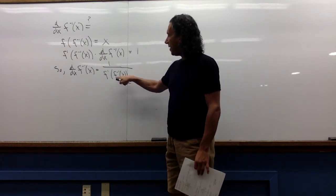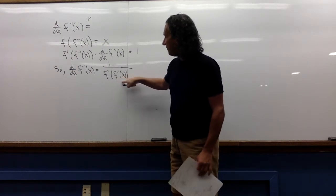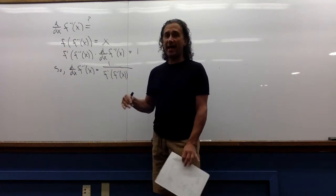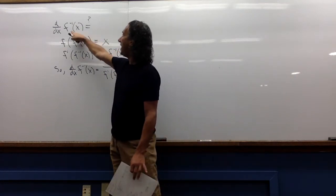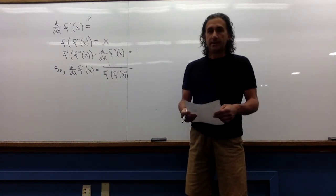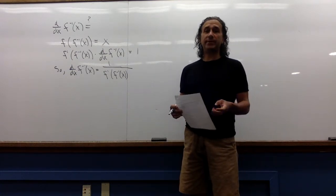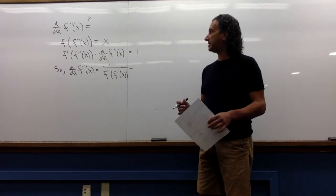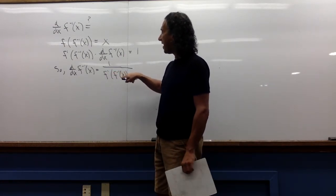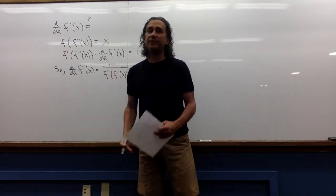So if I know f, which hopefully I do because I'm looking for the inverse, and if I know f inverse and I can compute the derivative of f, then I get as a bonus the derivative of the inverse function as well. This is admittedly abstract, so let's see how this works in a particular example. The concept is: I know the derivative of f, I don't know the derivative of f inverse, but I can use the derivative of f to find the derivative of f inverse.